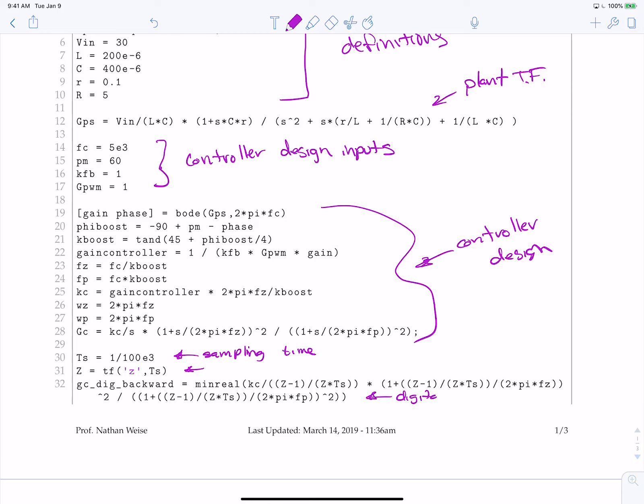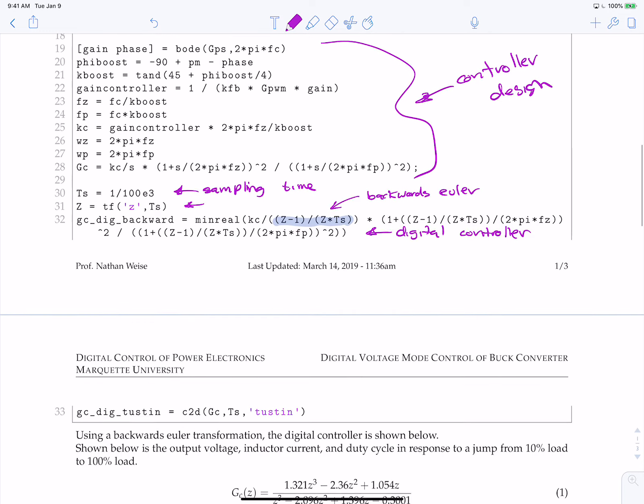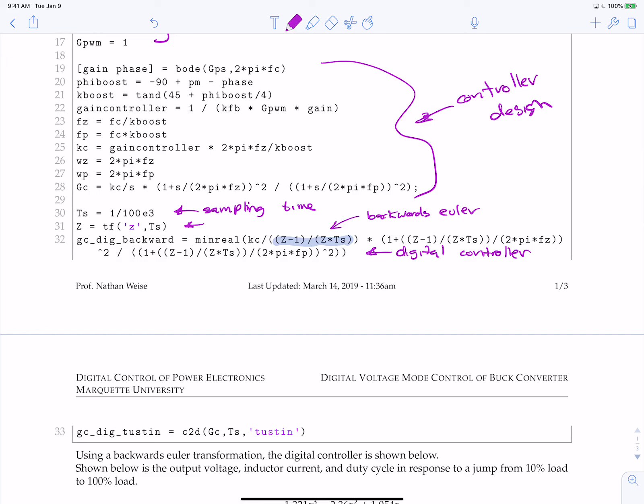In line 32, this will create our digital controller. Now let's just take a look at how I did this. All I did was, it's very close to line 28, except for what I did is replaced every s with z minus 1 divided by z times ts, which is the backwards Euler approximation.